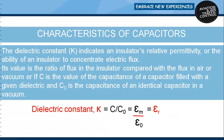Characteristics of a capacitor: dielectric strength is the ability of a dielectric to withstand a potential difference without arcing across the insulator. The dielectric constant K indicates an insulator's relative permittivity, or the ability of an insulator to concentrate electric flux. Its value is the ratio of flux in the insulator compared with flux in air. If C is the capacitance of a capacitor filled with a given dielectric and C₀ is the capacitance of an identical capacitor in a vacuum, then K = C/C₀ = ε_r = ε_m / ε₀.